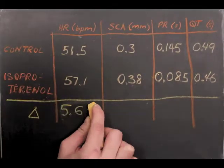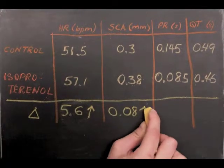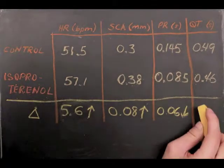This is seen in the following results: an increase in heart rate, an increase in SCA, a decrease in PR interval, and a decrease in QT interval.